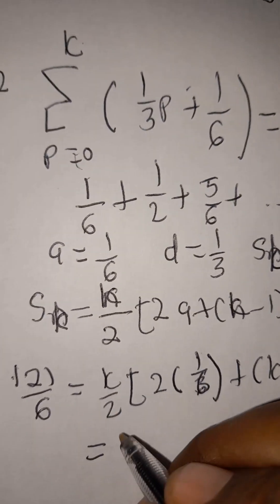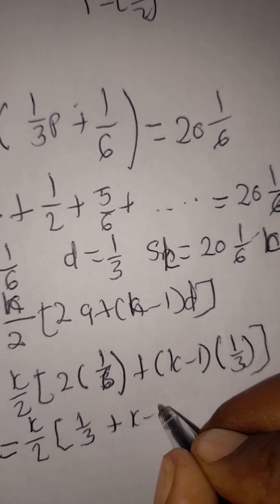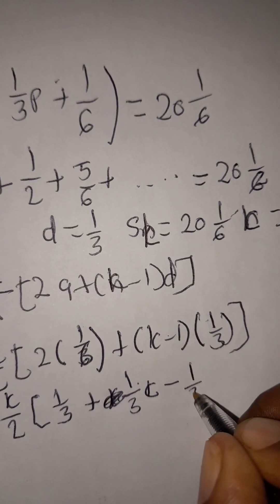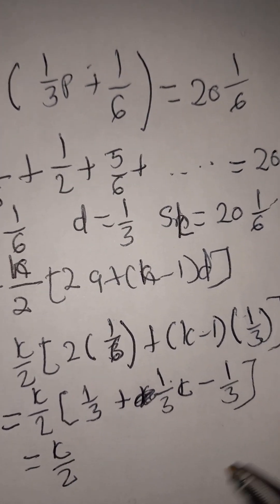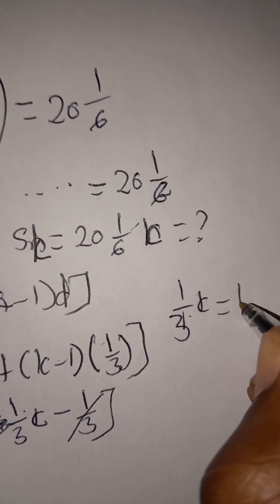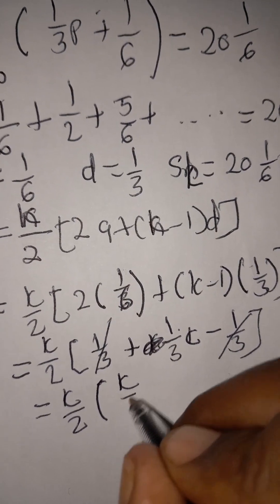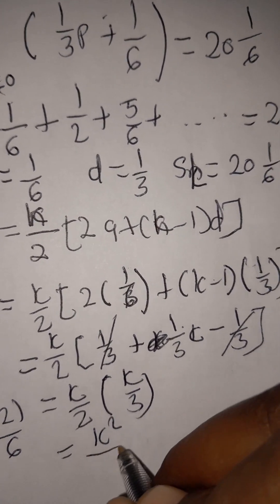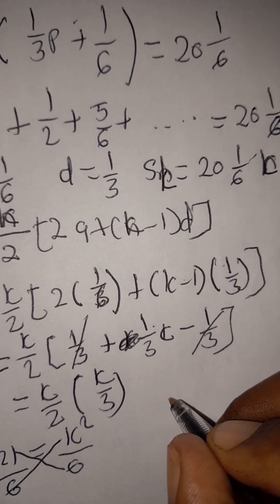Working out the bracket: 2×(1/6) = 1/3. Then 1/3 + (k−1)×(1/3) = 1/3 + k/3 − 1/3 = k/3. So we have 121/6 = k/2 × k/3 = k²/6. Cross-multiplying: 6k² = 6×121, so k² = 121.